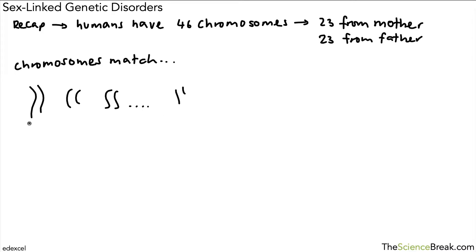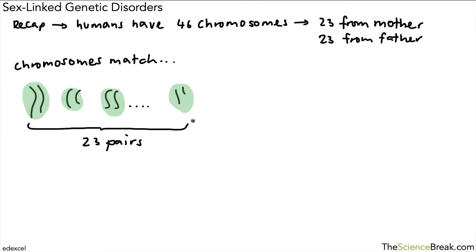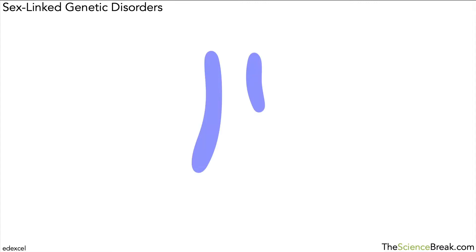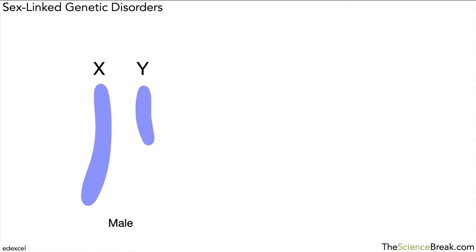We can go up to 23 pairs of chromosomes. What we might notice is that for the last set at the end, they don't seem to match up. These are the sex chromosomes — the X and the Y chromosome. Here they are shown on screen in much more detail: the X chromosome is the slightly longer one and the Y chromosome is the slightly shorter one.